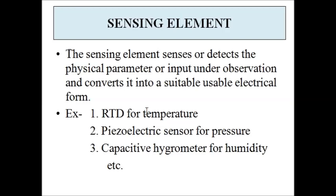Next we have the sensing element, which is nothing but a sensor. It basically converts the physical parameter or physical quantity under observation — which we want to measure — into a suitable electrical output. This electrical output can be a voltage or current signal, or a change in resistance, inductance, or capacitance.